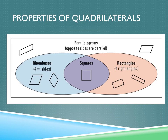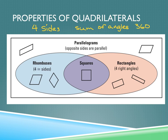Let's go ahead and fill in everything that we've learned about quadrilaterals. What we know about quadrilaterals in general is they have four sides. We also know that the sum of their angles is 360 degrees. These are things that we've learned.